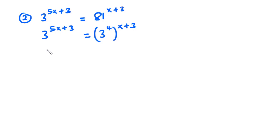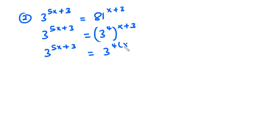So that's going to be 3 exponent 5x plus 3 equals 3 exponent 4 into bracket x plus 3. Now because the bases are the same,